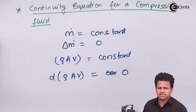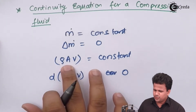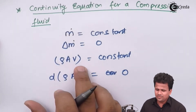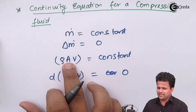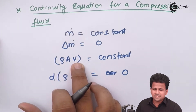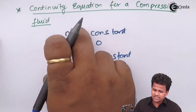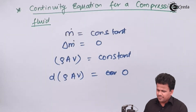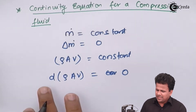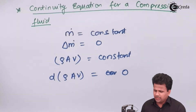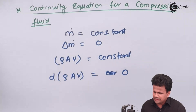We can write mass as density times volume, and volume can be written as area times velocity, since for mass flow rate, length per unit time equals velocity. Now we have a derivative of three terms here.